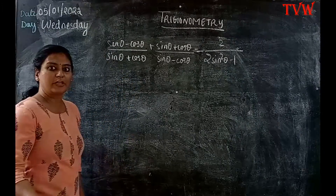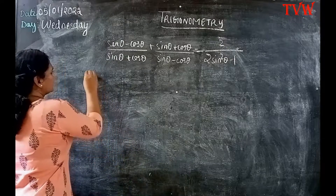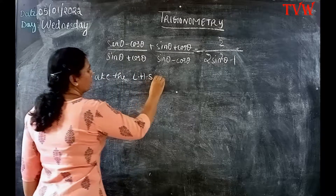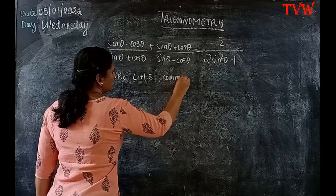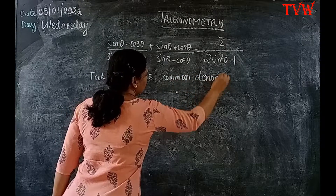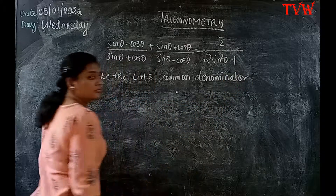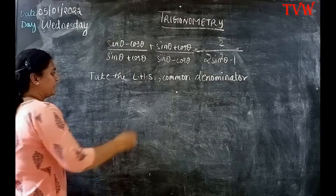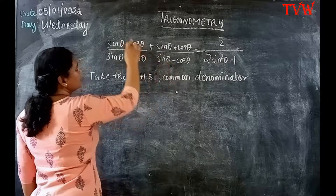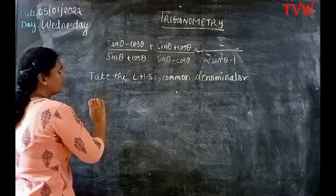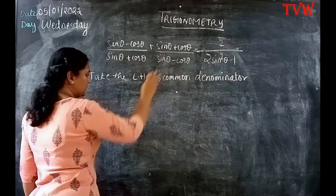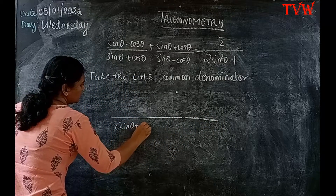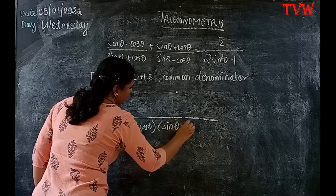What I want to do is get a common denominator first. So I am going to take the left hand side and find a common denominator. To do that I need to cross multiply — take the LCM. I will multiply each expression by the other's denominator. The common denominator is going to be (sin θ + cos θ)(sin θ − cos θ).